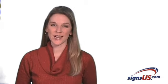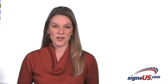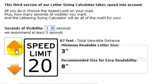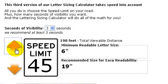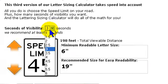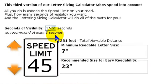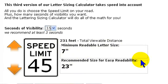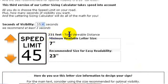Now here's the really cool sizing calculator for signs going out by the road. This calculator takes speed into account. For example, let's suppose the speed limit on your street is 45 miles per hour and you want your message to be readable by passing motorists for at least 3.5 seconds. Then you'll instantly see that you need at least 7 inch tall letters, or for easy readability, 23 inch tall letters. This 231 feet total viewable distance is a reference point calculated from the rate of speed and the number of seconds you select.